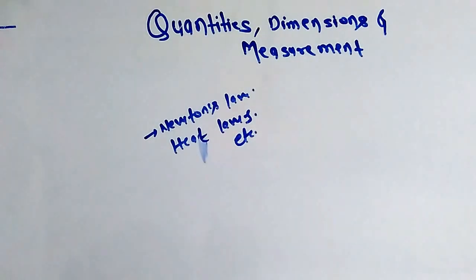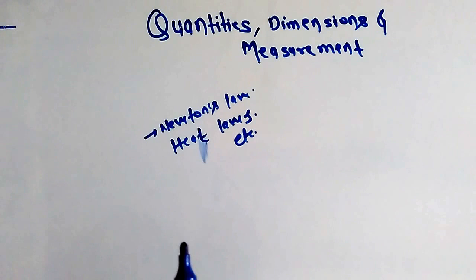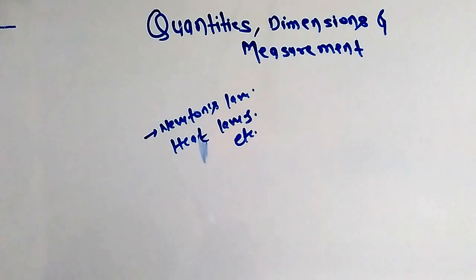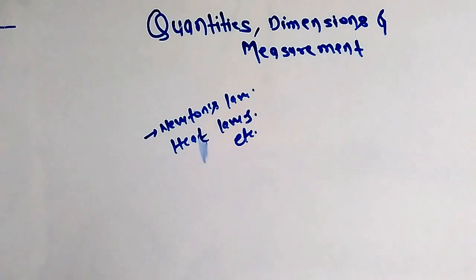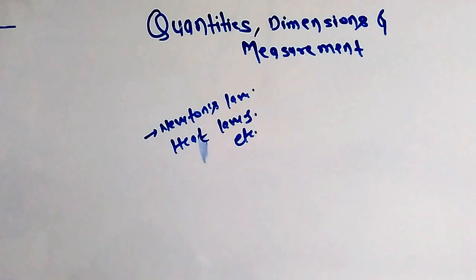These different laws of physics should be followed by those quantities, then they are termed as physical quantities. We can also define it as: an object or phenomenon in nature which we can measure and which follows the laws of physics is known as a physical quantity.